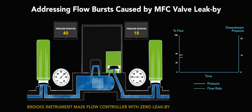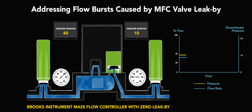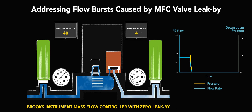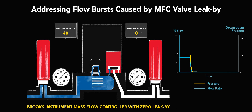A command setpoint is sent to the MFC to control the desired gas flow rate going into the process chamber during this recipe step. A zero command setpoint is then sent to the MFC, closing the MFC valve. The MFC valve and isolation valves are now all closed. The process recipe is now complete.